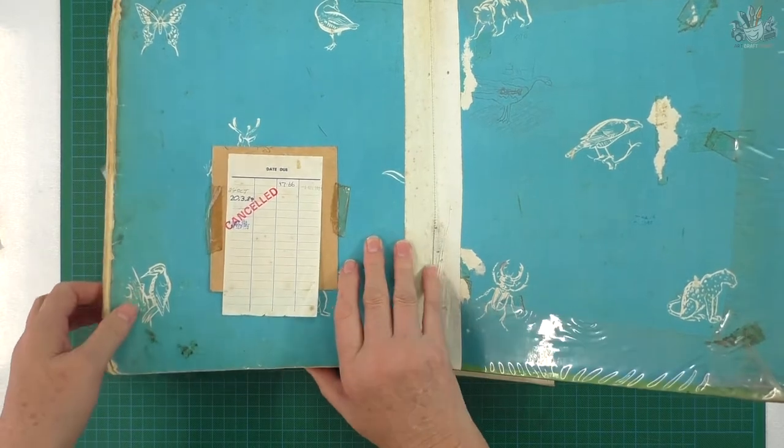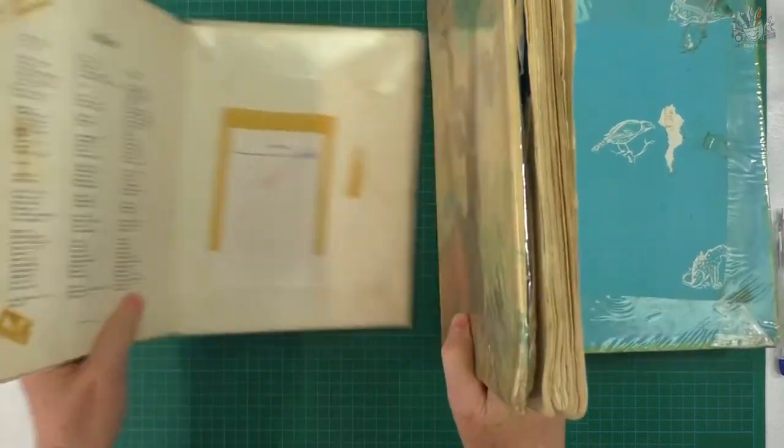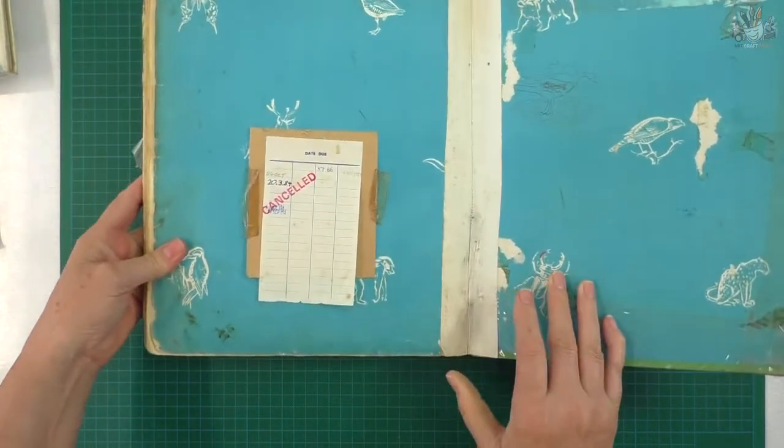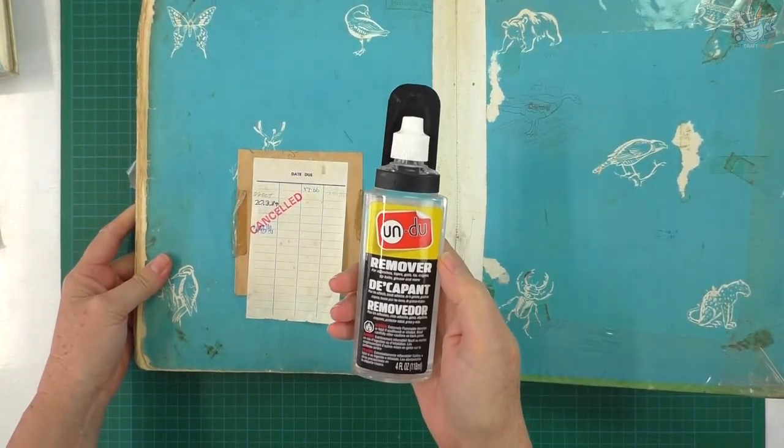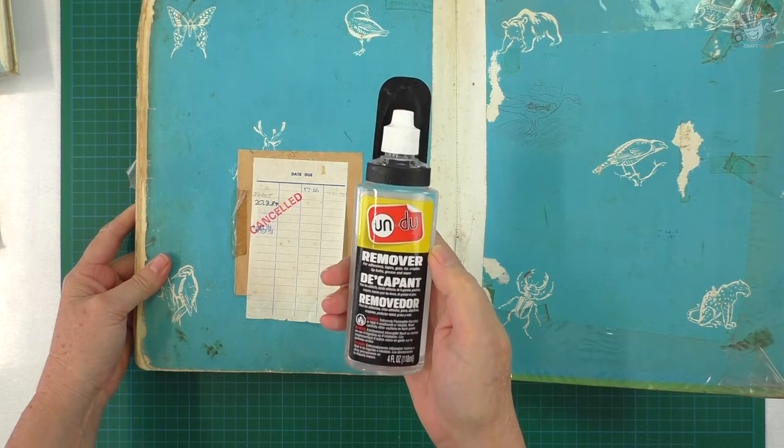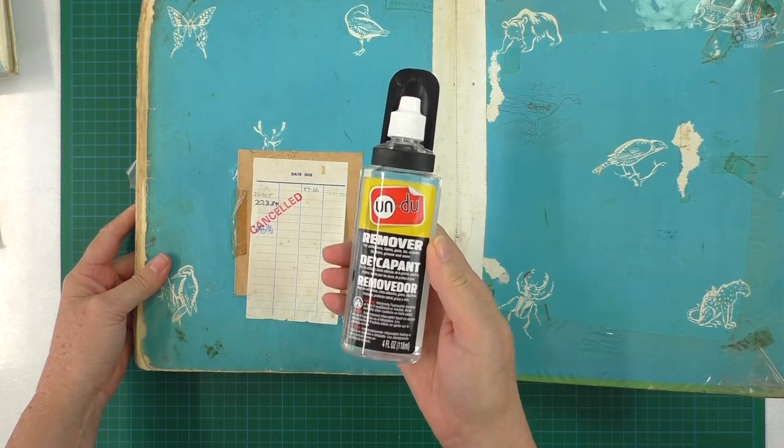So I'll do this one first because it's the easier of the two. I use a product, I've shown you this product before, it's called Undo. In Australia I got this from Bunnings.